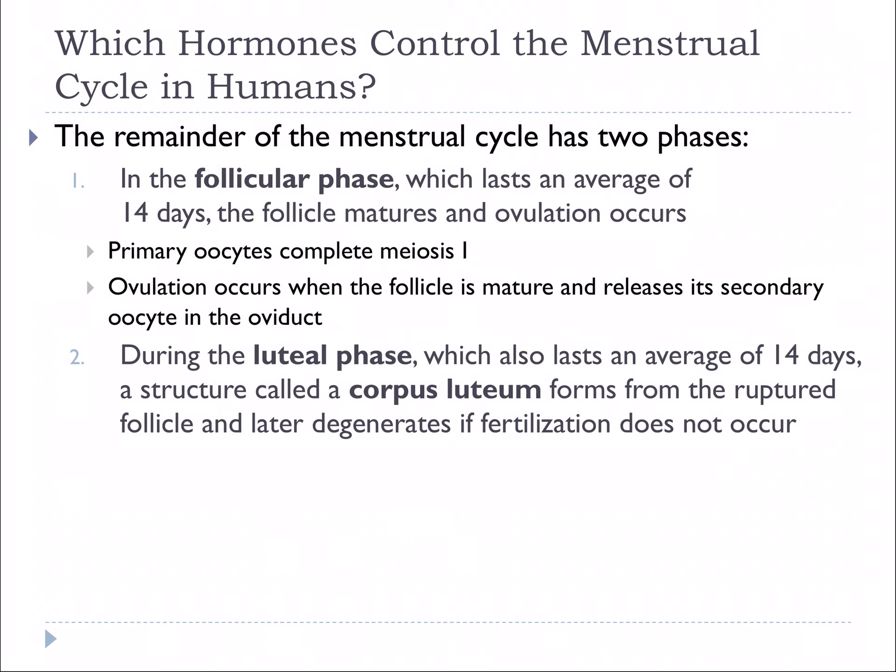The menstrual cycle has two phases. In the follicular phase, which lasts about 14 days, the follicle matures. Surrounding each developing egg is a group of cells that nourish the egg, called a follicle. The primary oocyte will complete meiosis I, and ovulation occurs when the follicle is mature and releases the oocyte into the oviduct. During the luteal phase, which also lasts about 14 days, a structure called a corpus luteum forms from the ruptured follicle and later degenerates if fertilization does not occur.